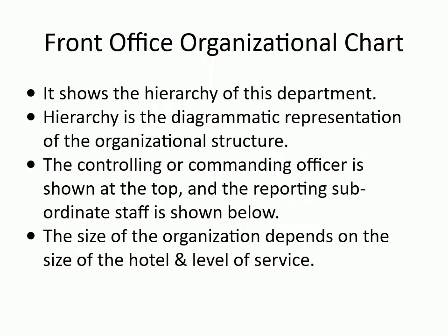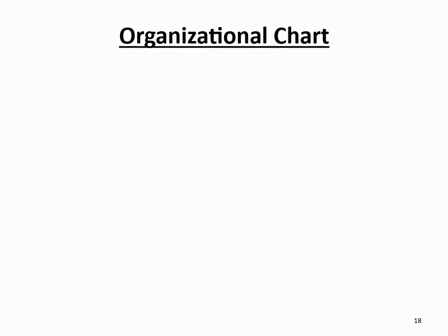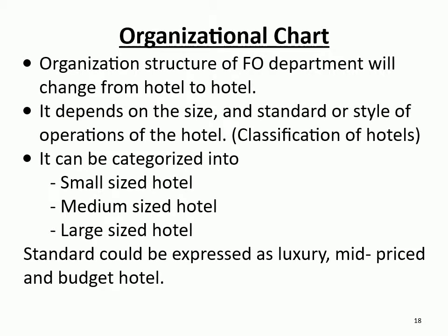The front office organizational chart shows the hierarchy of the department. Hierarchy is the diagrammatic representation of organizational structure — the controlling or commanding officer is shown at the top, and reporting subordinate staff below. The size of the organization depends on the size of the hotel and level of service. The structure will change from hotel to hotel depending on size and standard, categorized as small, medium, or large-sized hotels, and luxury, mid-priced, or budget standards.